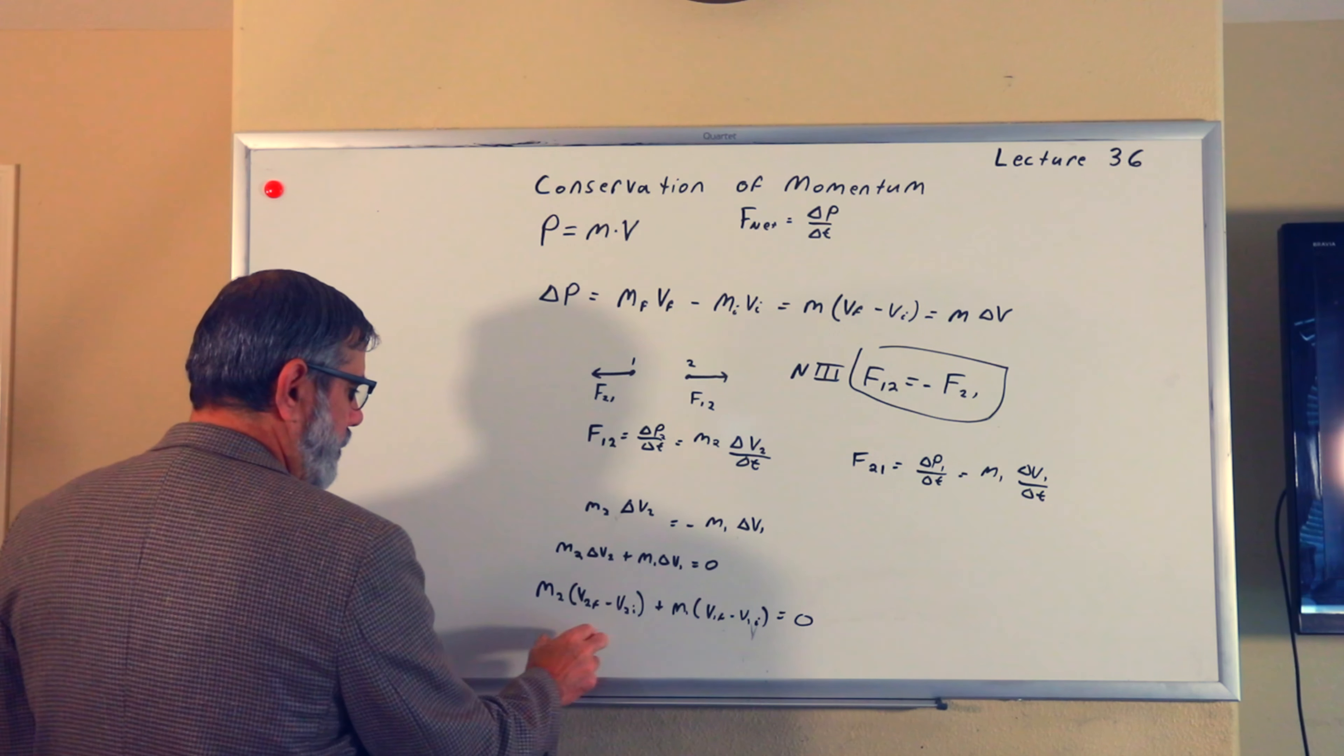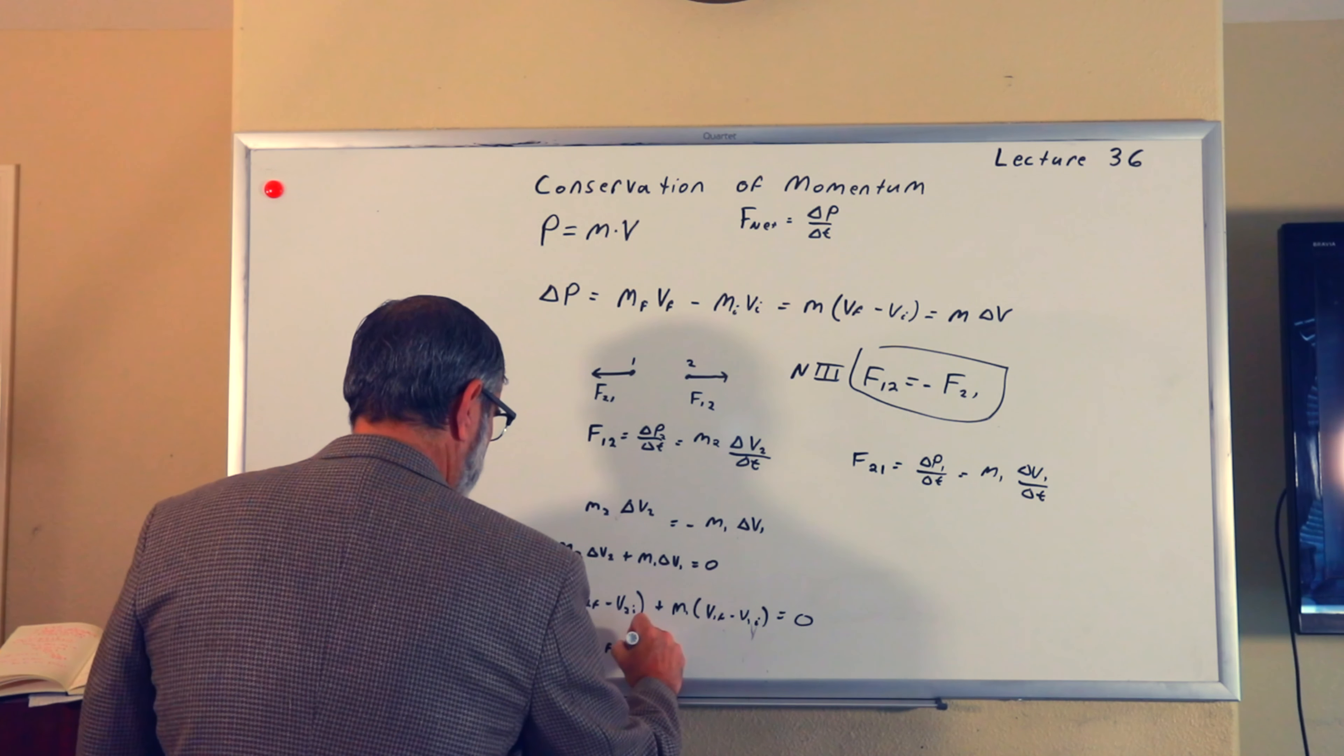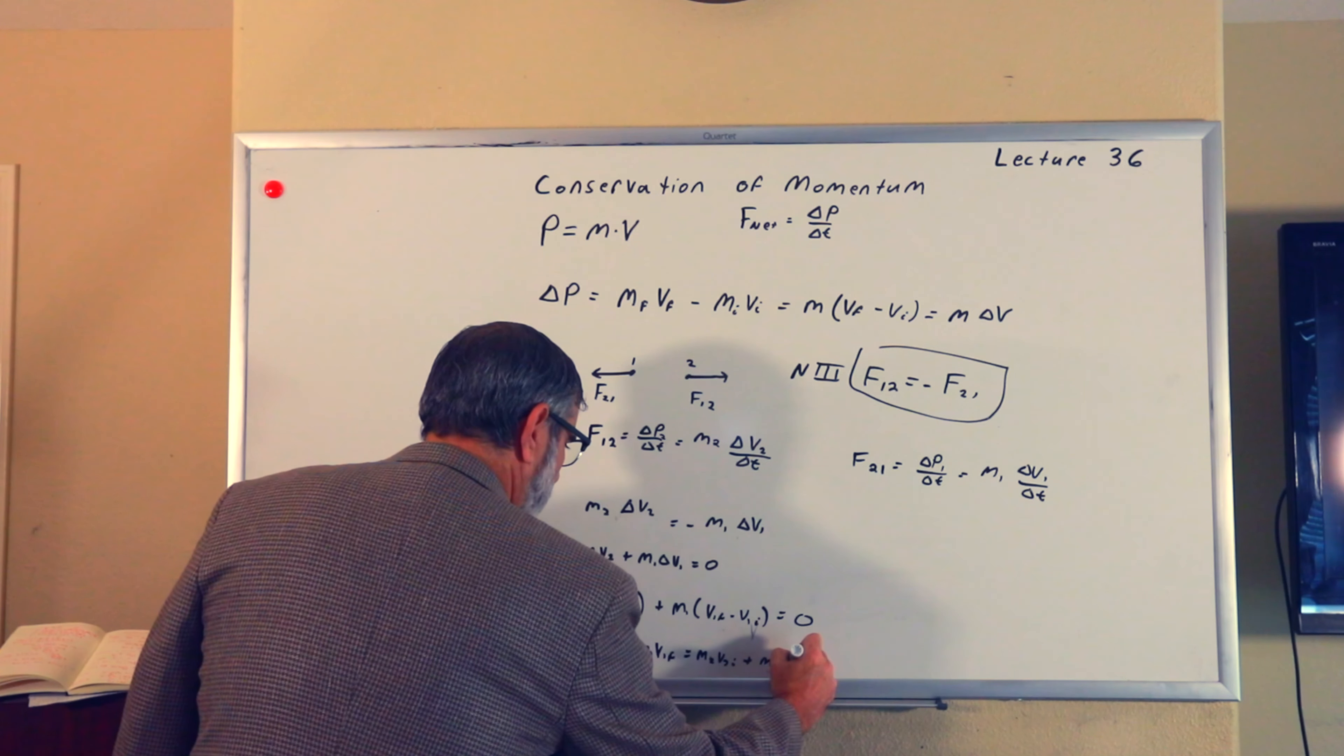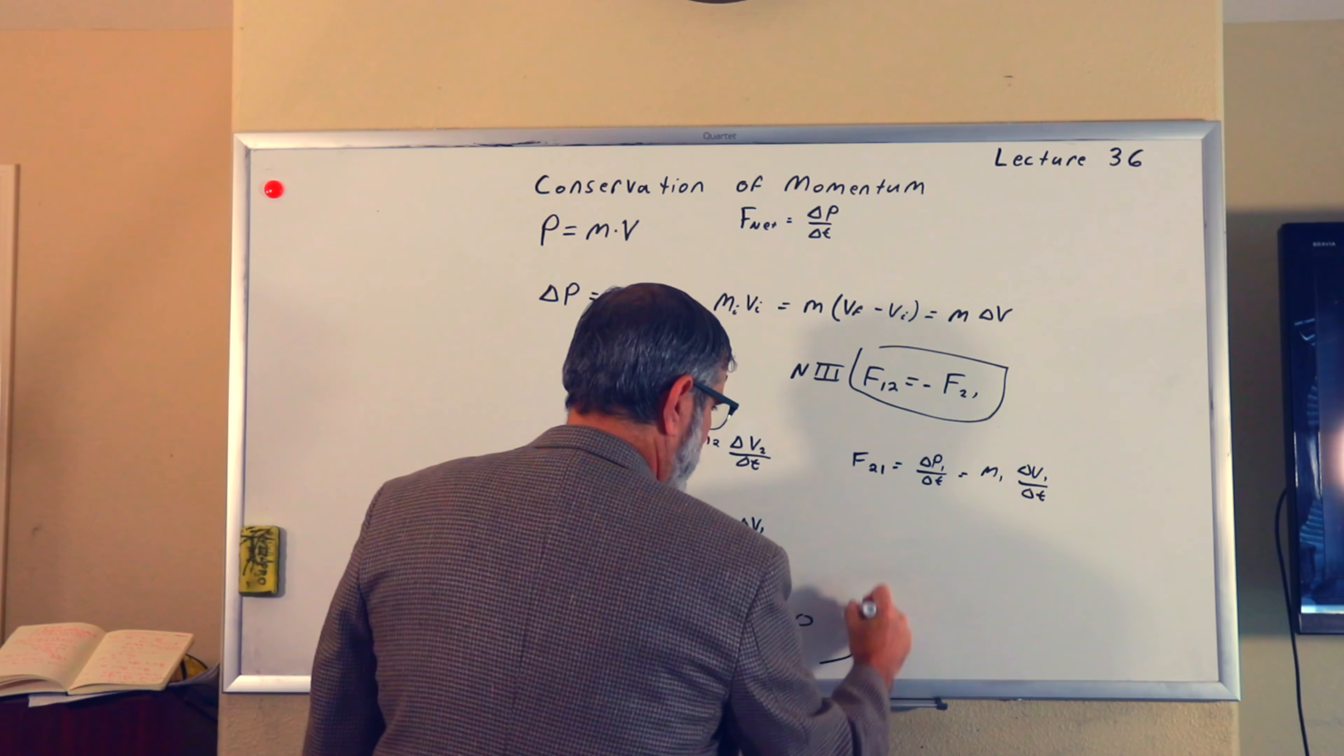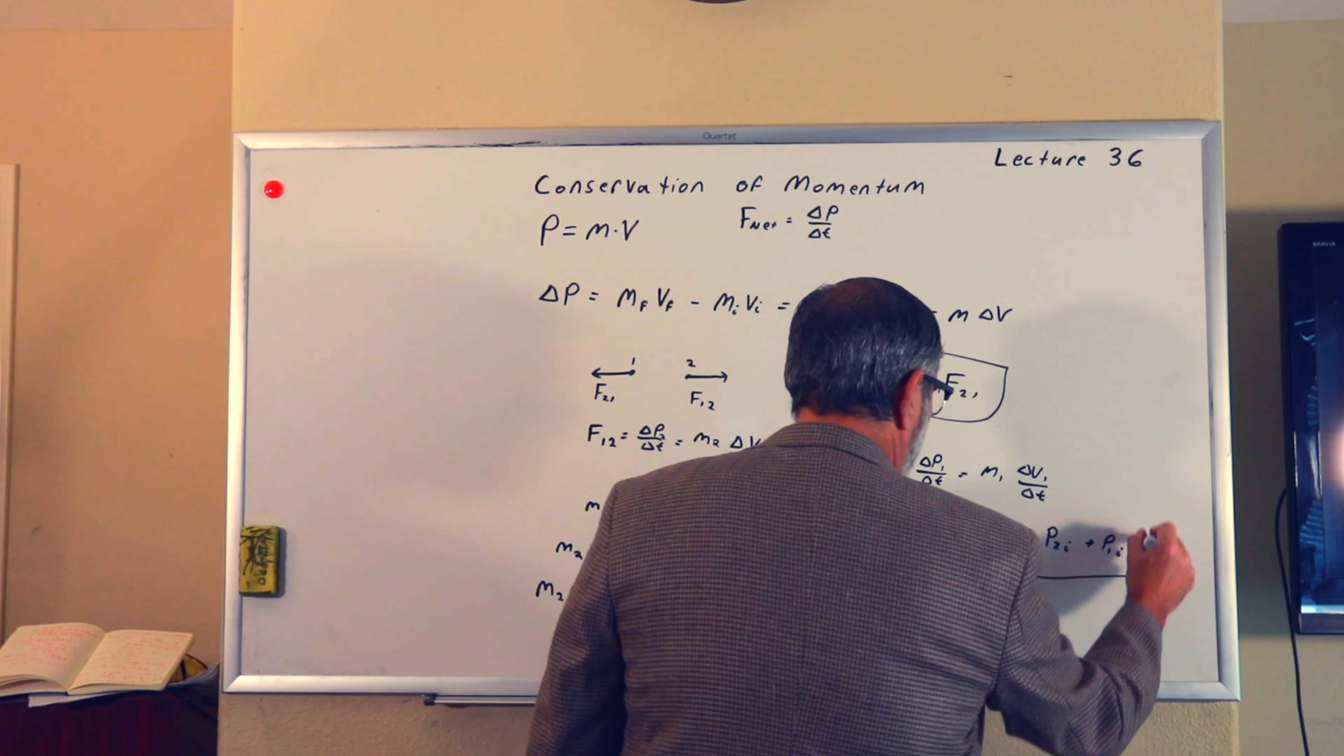What is delta V_2? This will be M_2 times V_2_final minus V_2_initial plus M_1 times V_1_final minus V_1_initial, and that equals zero. Distributing the masses and collecting the final terms on one side and moving the initial terms to the other side, we finally arrive at the conservation of linear momentum, which says that M_2 V_2_final plus M_1 V_1_final equals M_2 V_2_initial plus M_1 V_1_initial. Another way to write that, remember the definition of momentum is mass times velocity, this just gives us that P_2_final plus P_1_final equals P_2_initial plus P_1_initial. This is the conservation of linear momentum.